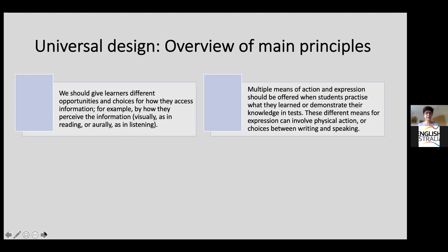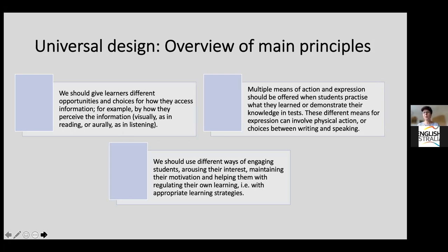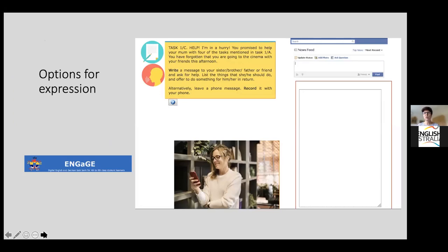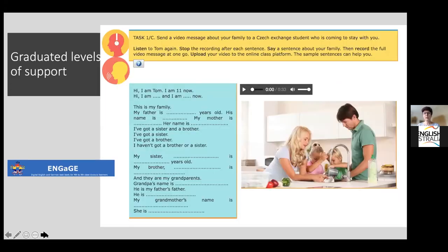The third principle — using different ways of engaging and motivating students — is probably obvious to anyone in language teaching. What I'd like to show is one option for task design developed in a project: for younger students with dyslexia, you can build options into your task design where some students write a message and some students record it with their phones. This illustrates how flexibility can be embedded directly into a task.